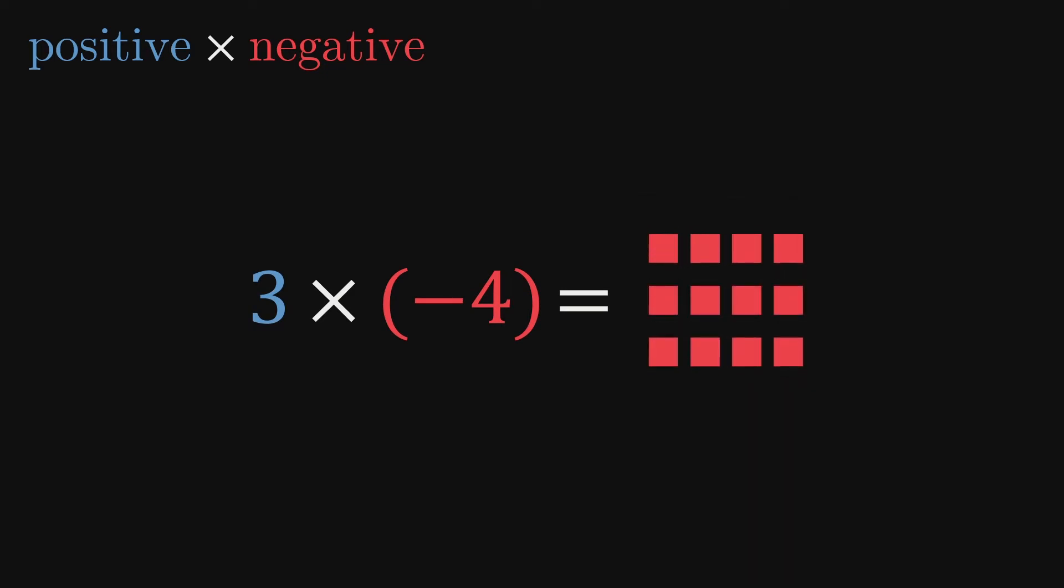Multiplying a positive by a negative isn't really a problem either. For example, 3 times negative 4 is just three groups of negative 4, which is negative 12.